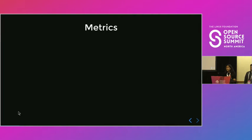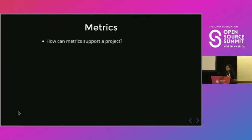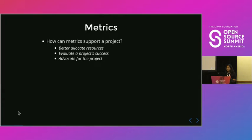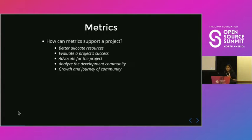It's no secret that git repositories can reveal a lot of information about a project's health and community. We can derive insights such as the velocity of a project, blockers during development, and community engagement. Metrics such as member churn, bottlenecks, contribution, average time to triage, and time to merge can all help software development teams and open source program offices better allocate resources, evaluate ongoing project success, advocate for the team's work, and analyze the growth of the development community.